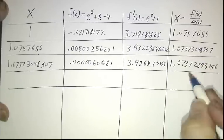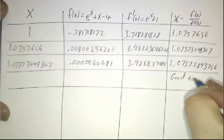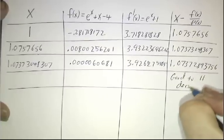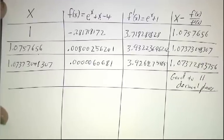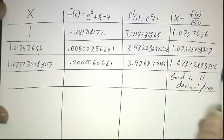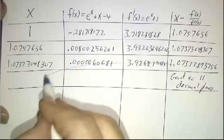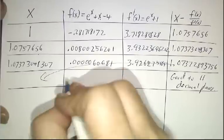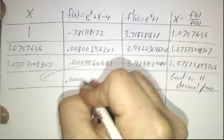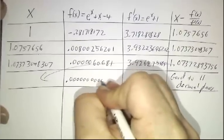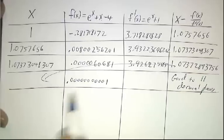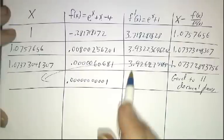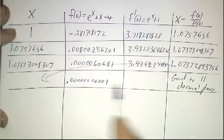And that answer is actually good to 11 decimal places. If you plug in this number, you take f of that, you get 0.000000000000001. And then f prime will be about 3.9 and the difference will not affect the last decimal place.